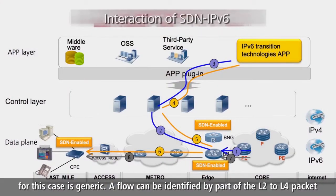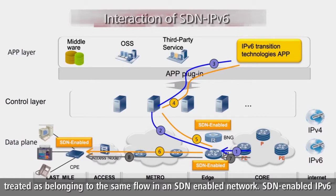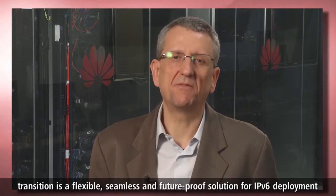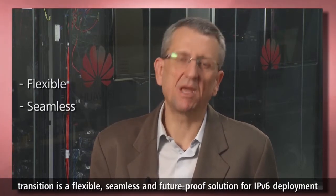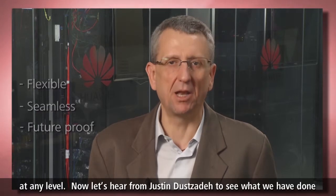The processing shown for this case is generic. Flow can be identified by part of the Layer 2 to Layer 4 packet header information, and for example, all packets to a particular subscriber can be treated as belonging to the same flow in an SDN-enabled network. SDN-enabled IPv6 transition is a flexible, seamless, and future-proof solution for IPv6 deployment at any level.